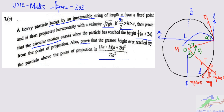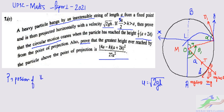Here is the diagram. Let a particle of mass m be attached to one end of a string of length A, whose other end is fixed at O. The particle is projected horizontally with velocity u = √(2gH) from point A. If P is the position of the particle at time t such that the angle AOP = θ.